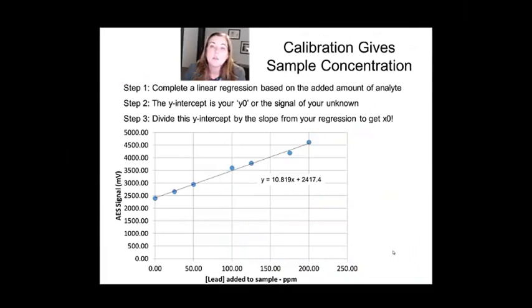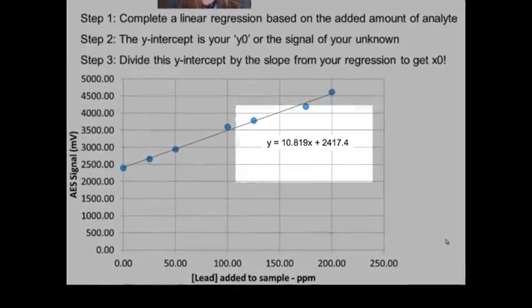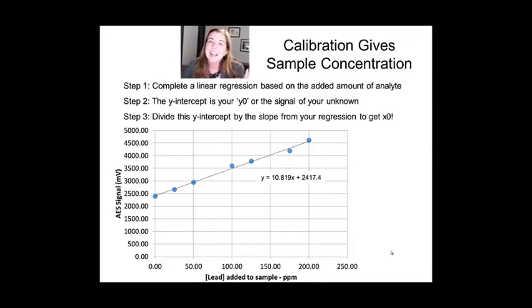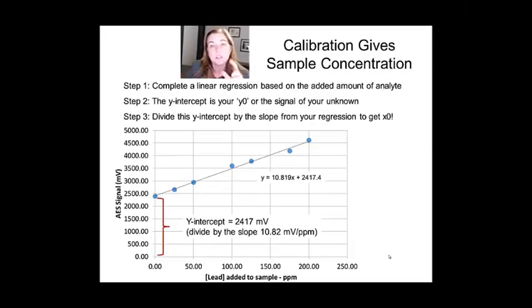So when you do the method of standard addition, what you're going to get is a calibration curve that you're going to treat in much the same way you treated any of the other calibration curves we've talked about. You're going to calculate the rise over the run, and that's going to give you the instrument response function or the slope of the line. The difference in the method of standard additions is that to get the concentration of your unknown, it's already in your calibration set because the zero added lead actually has some lead in it. So what you do is you take your y-intercept, which is the signal of the sample alone, and you divide that by the slope that you've defined from all the other data points in your line. And when you do that, you're going to be able to calculate the unknown concentration.